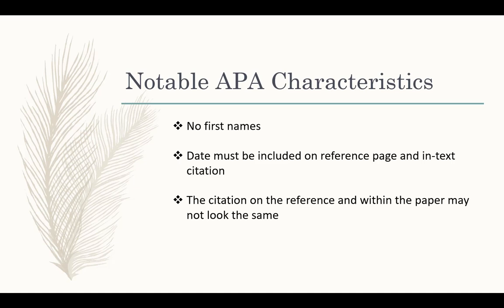There are a few things to note about APA that remain consistent for all source types. First names aren't used, but initials are included on the reference page. Also, the date has to be included on both the reference page as well as in the in-text citations. It is important to locate this for each source you use. Additionally, the way something looks on the reference page is not always the way it looks within the paper.